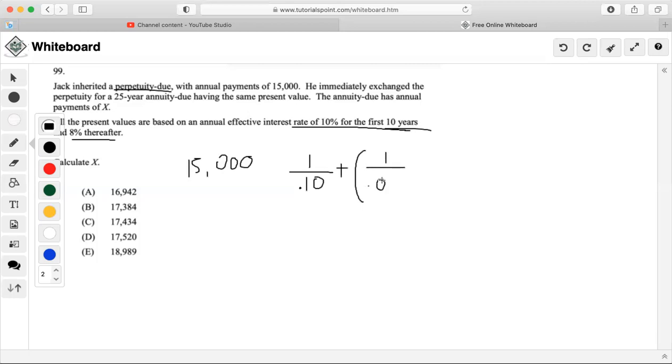But the thing is, we can't just say that it's just this plus 1 over 8%. We also have to keep in mind that we have to get rid of what has occurred previously in order to compute the second part properly. So that's why we're going to do 1 over 0.08 minus 1 over 0.10 to compensate for what happened in the earlier years.